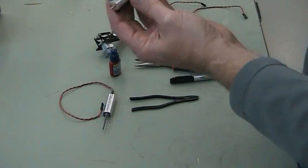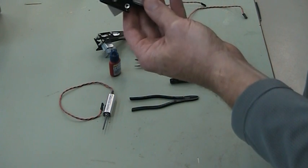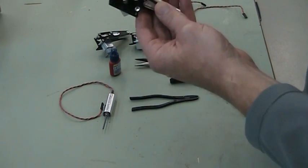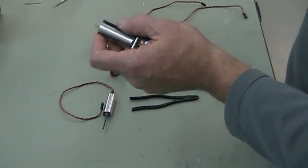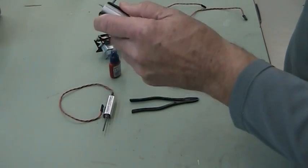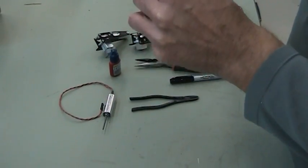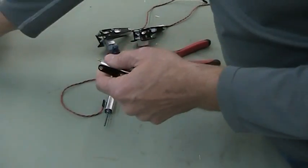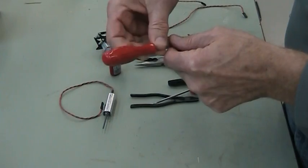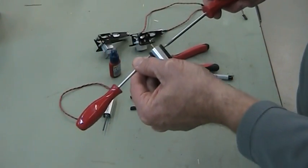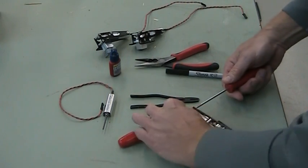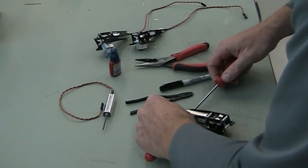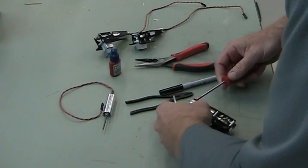Now these Torx screws go into a spacer, and sometimes the spacer wants to turn instead of backing the Torx screw out. So we'll see how this one goes. That one wants to turn, so what I do is I just put another Torx driver in here. And then that just allows me to get that started.